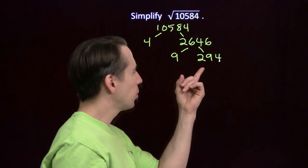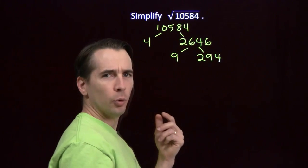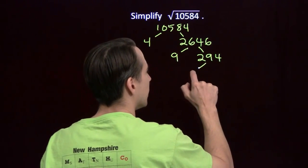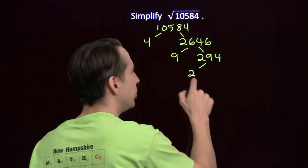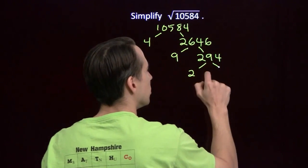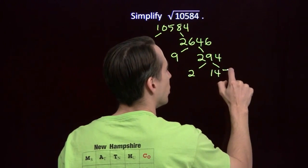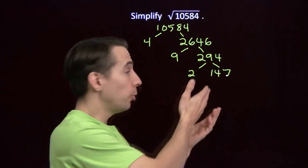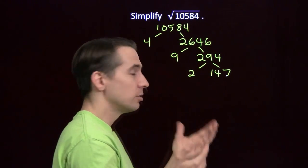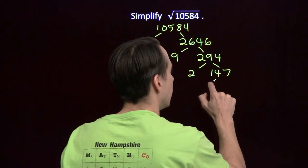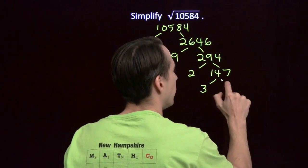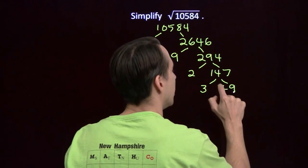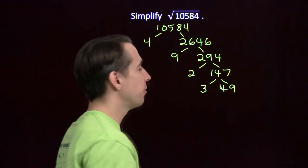I don't see any more perfect square factors I can pull out of 294 right away, but just to be sure I'm going to break that down as much as I can. I'll pull out a 2 — it's obviously even. 2 goes into 294, 147 times. 147 is a multiple of 3 because the sum of the digits is 12, which is a multiple of 3. So I pull out a factor of 3. 3 goes into 147 — 49 times. Found another perfect square factor.